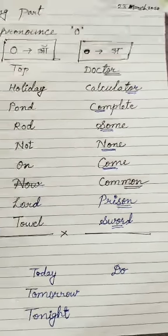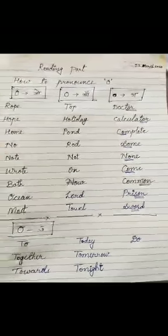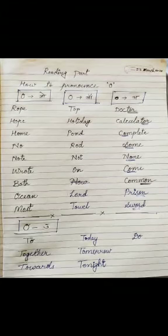So these are the examples of this O. इस अकेले O के 4 प्रनाउंसिएशन होते हैं, और आज हमने इनके 4 प्रनाउंसिएशन पढ़ लिए हैं. तो आप सभी इनसे related examples निकाल कर अपनी copies में write करेंगे. Thank you.